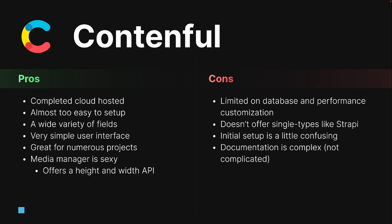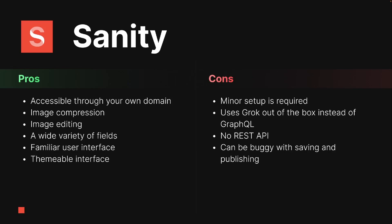Lastly, let's look at Sanity. Sanity's pros: it basically allows you to access it through your own domain as an admin interface. If any of you have used Netlify CMS, it works off the same principle — it just adds a slash admin route to your webpage to allow you to edit the content, which is pretty cool. It also comes with image compression and image editing. Just like Contentful, it offers a wide variety of fields including enumerated fields, which Strapi doesn't offer by default.